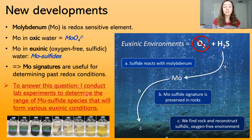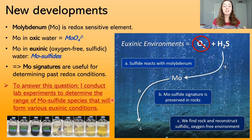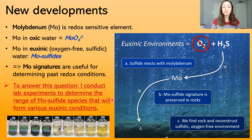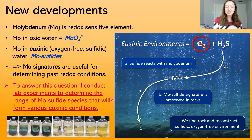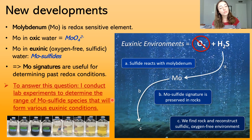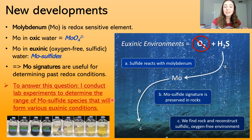To answer this question, I conduct lab experiments to determine the range of molybdenum sulfide species that form in various euxinic conditions. If there are systematic differences in the species or chemical composition of molybdenum formed in certain euxinic conditions versus others — for example, those containing more or less sulfide, or iron, or other metals that might form mixed metal sulfides — this can give us an idea of a more specific environmental reconstruction. We could say an environment was not only euxinic, but strongly sulfidic, or weakly sulfidic with occasional oxygenated inflows, giving us a much better understanding of how redox conditions have fluctuated in Earth's oceans through time.